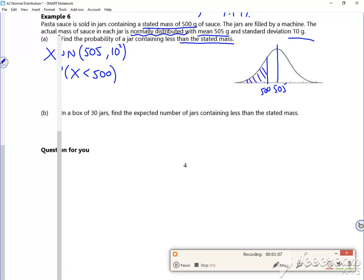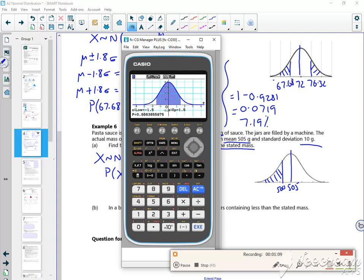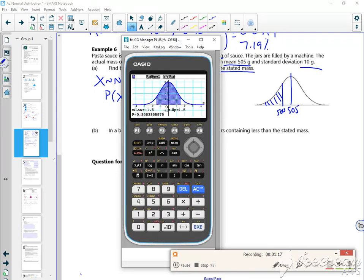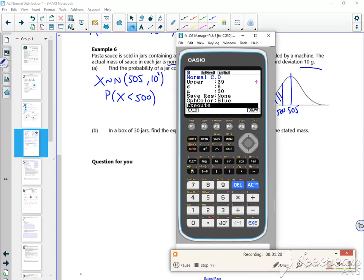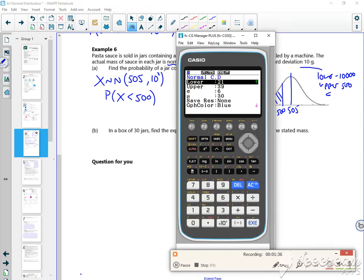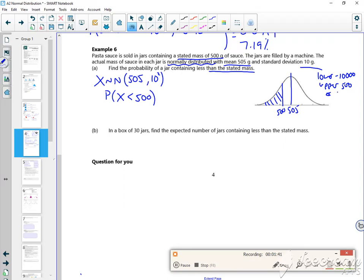So let's see what it is. Bring it up on the calculator. Do it on the calculator. And that's gone down, hasn't it? Hang on. So exit. So my lower is going to be minus 10,000. My upper is 500. Sigma, we've said, is 10. And mu is 505.